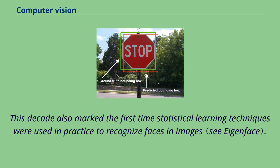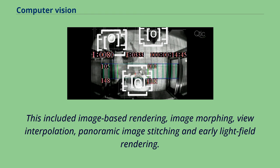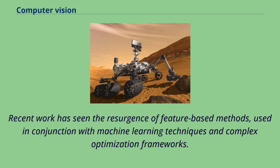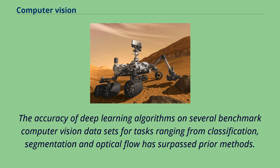Toward the end of the 1990s, a significant change came about with the increased interaction between the fields of computer graphics and computer vision. This included image-based rendering, image morphing, view interpolation, panoramic image stitching and early lightfield rendering. Recent work has seen the resurgence of feature-based methods used in conjunction with machine learning techniques and complex optimization frameworks. The advancement of deep learning techniques has brought further life to the field of computer vision, surpassing prior methods on tasks ranging from classification, segmentation and optical flow.